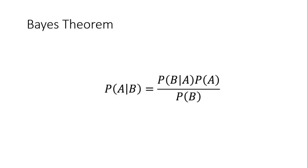If you take an example of which particular things we use this for — it is used to find out increments, ages, and risks. For that particular purpose, we use Bayes' Theorem. Thinking about the applications, there are many applications we use through Bayes' Theorem, such as Bayesian inferences, statistical inferences, degree of beliefs, and accounting for probabilities.